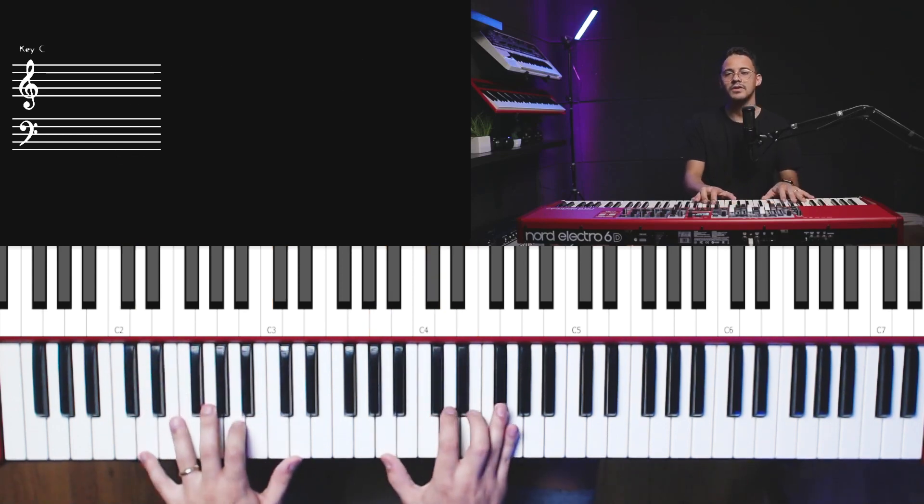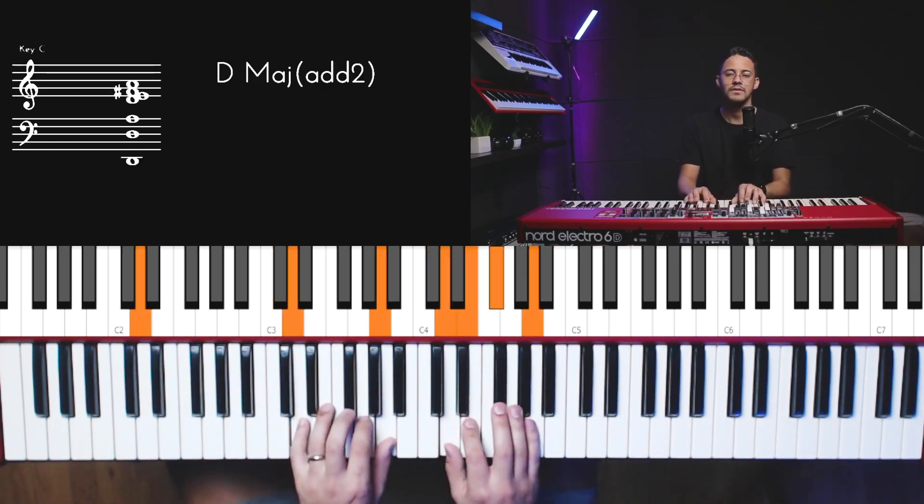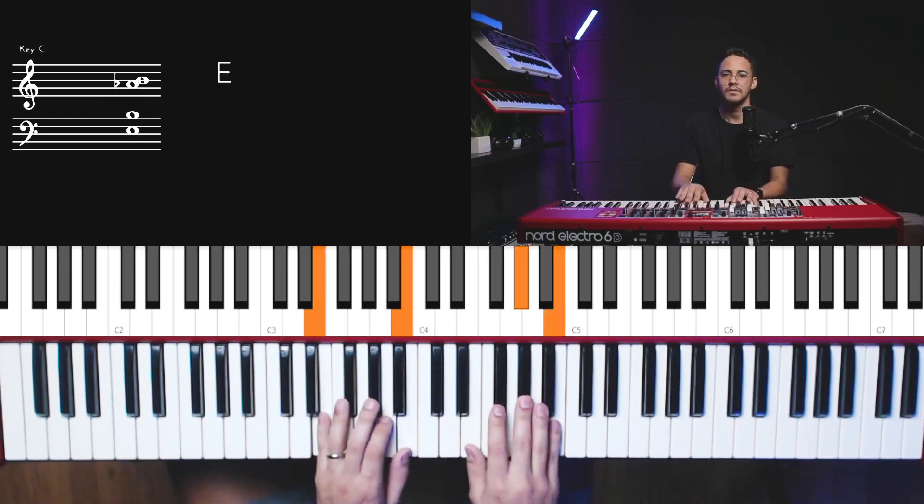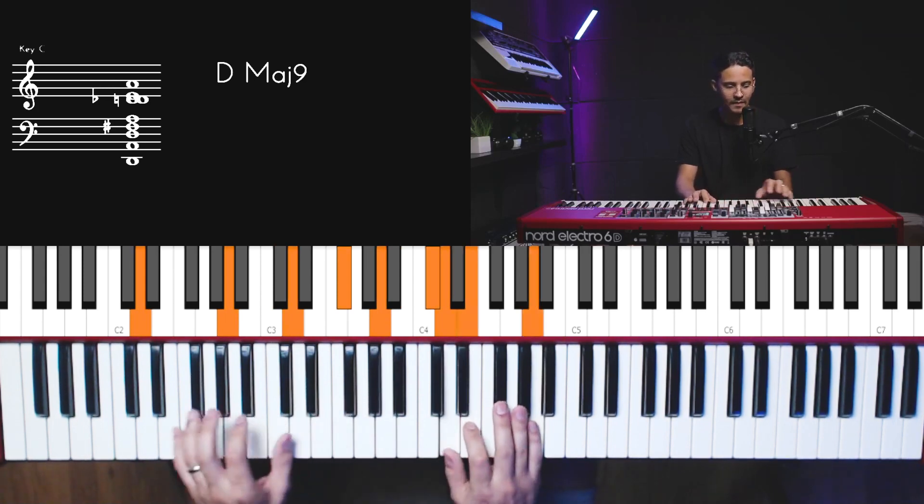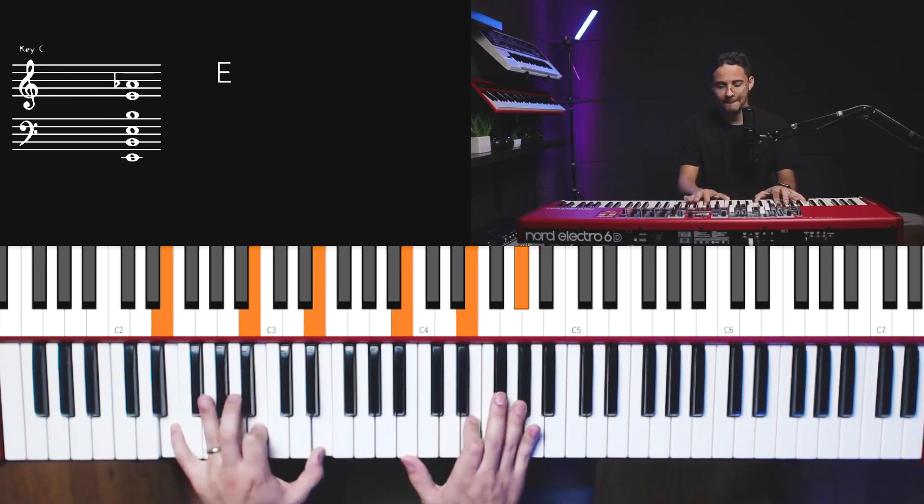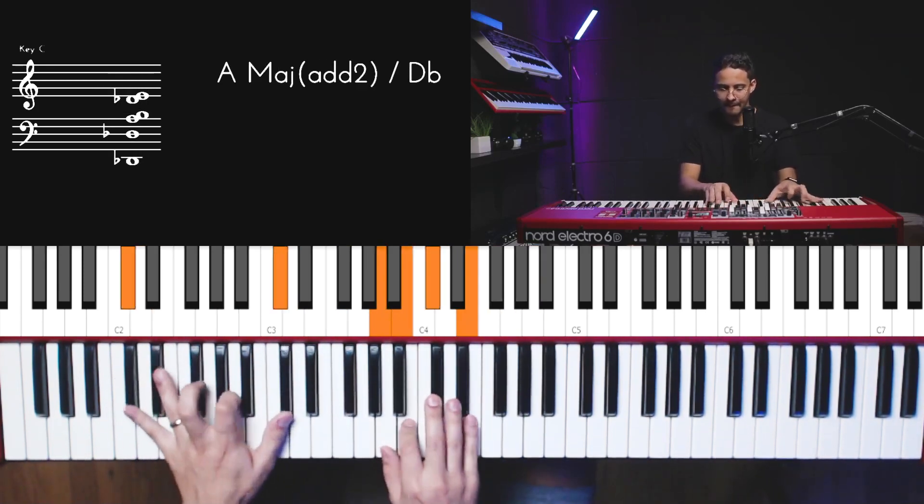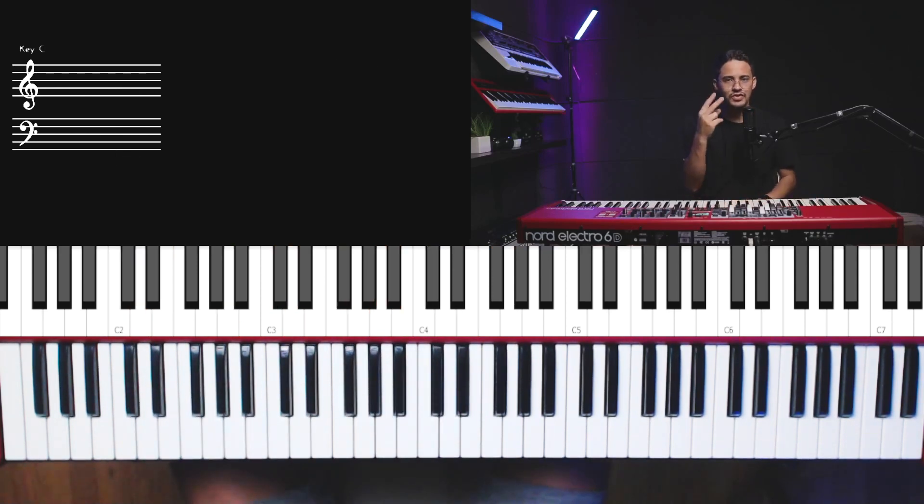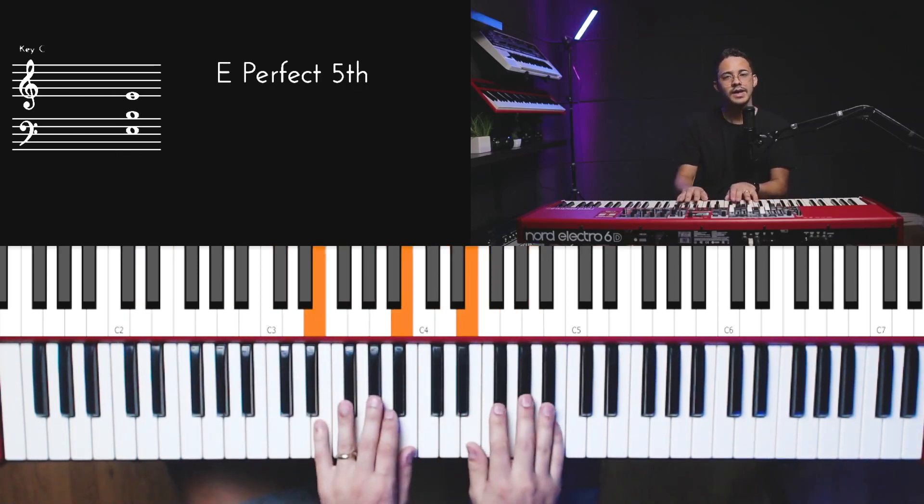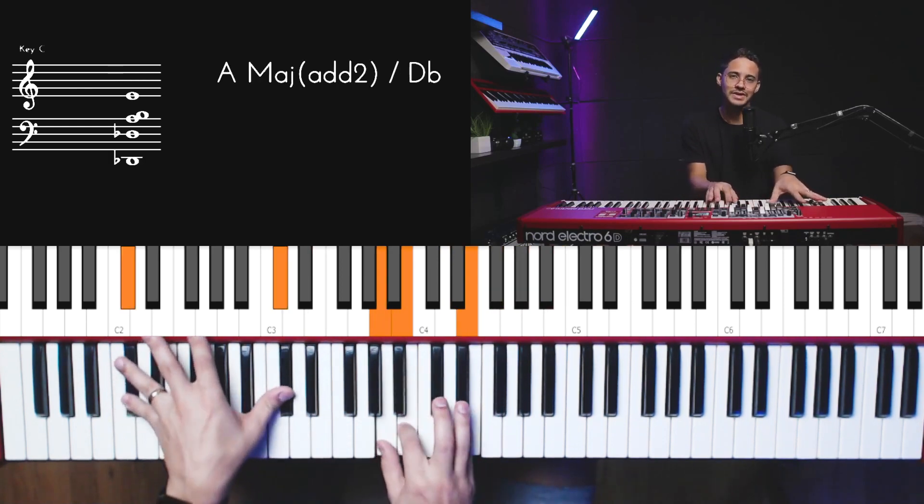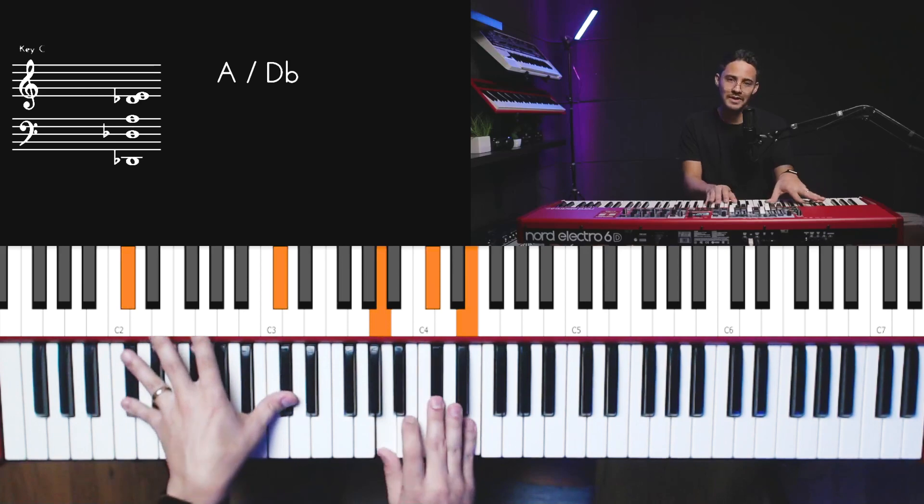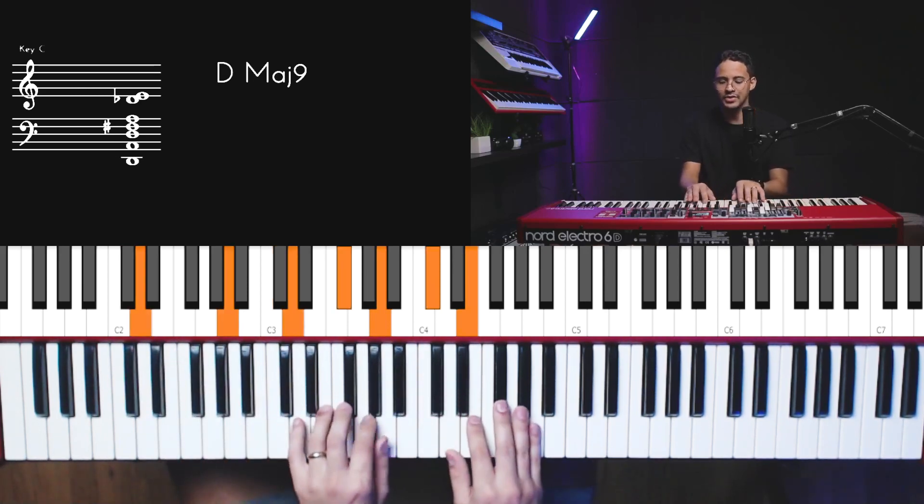E aí vai ficar assim. É como se fossem dois acordes, o Ré e o Mi. Só que antes de voltar para o Ré, você joga um acorde de passagem. Vamos dizer assim, você fez uma passagem nesse acorde aqui e caiu no Ré de novo.